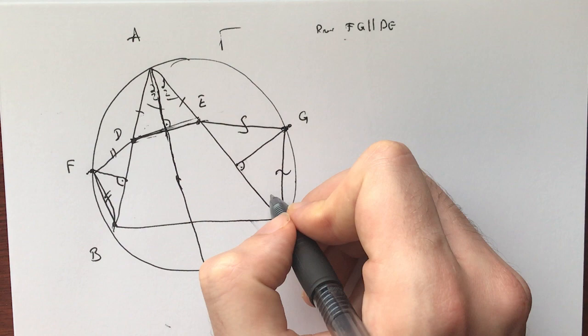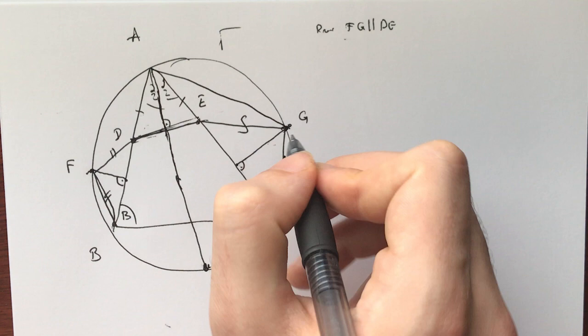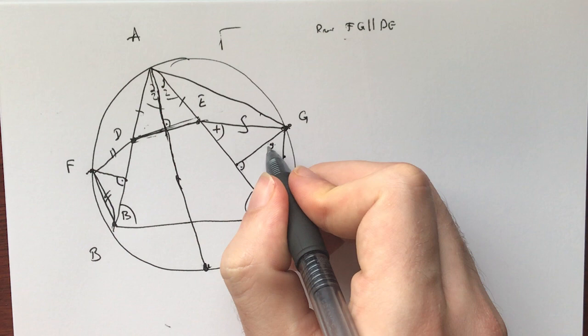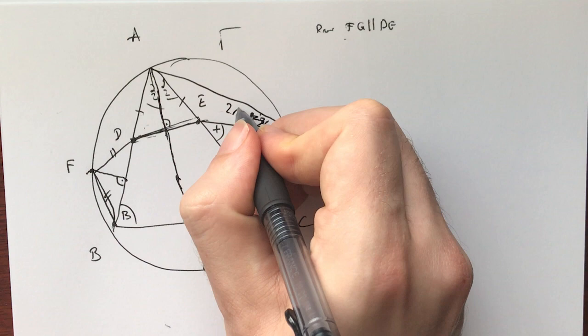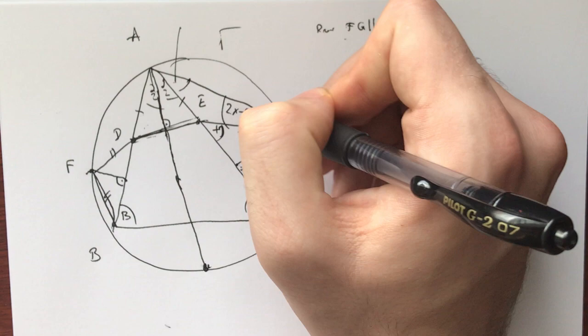Let's do some angles. Let's call this X. Then this is 90 minus X. So this is 180 minus 2X. This is 2X minus beta. This angle right here is going to be beta minus X.